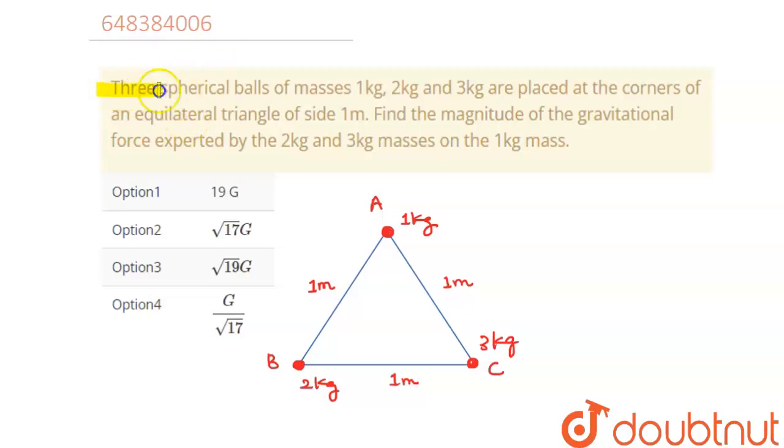Hello students, question is: three spherical balls of masses 1kg, 2kg, 3kg are placed at the corners of an equilateral triangle of side 1 meter. Find the magnitude of the gravitation force experienced by 2kg and 3kg masses on 1kg mass.